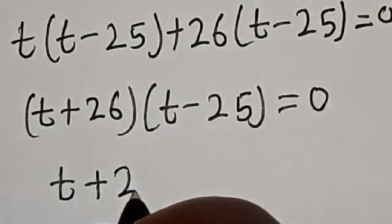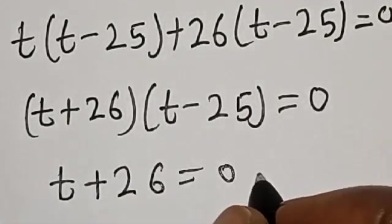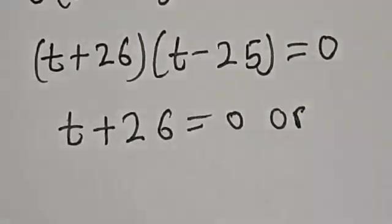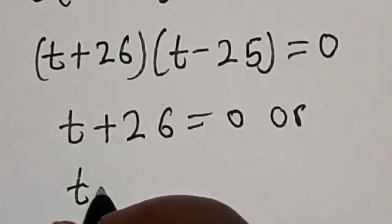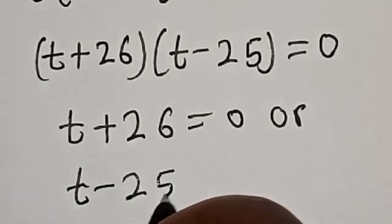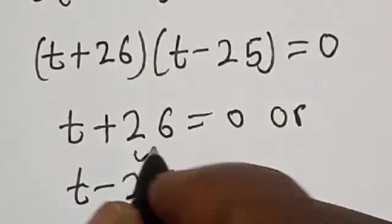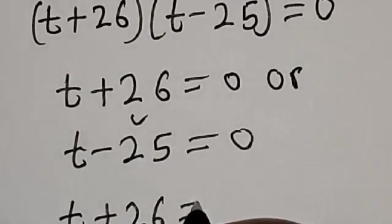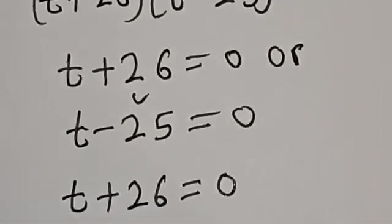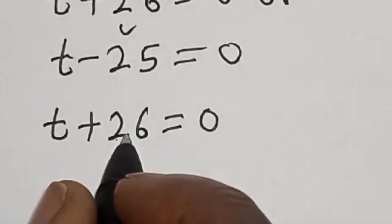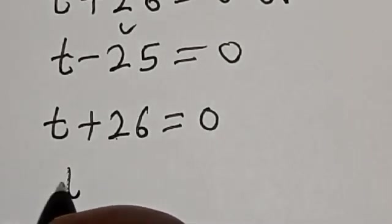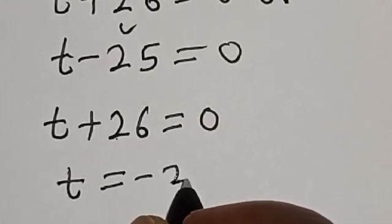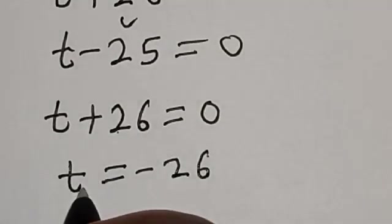There are two cases. Case one: t plus 26 is equal to 0. Bringing 26 to the other side, t is equal to minus 26. This is t1.